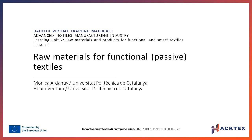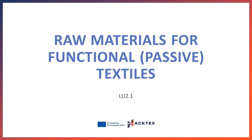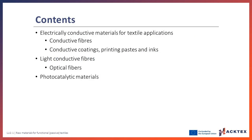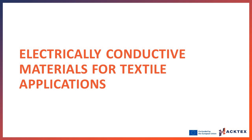HACTEX Training Materials, Advanced Textiles Manufacturing Industry, Learning Unit 2: Raw Materials and Products for Functional and Smart Textiles. Lesson 1: Raw Materials for Functional Passive Textiles. Passive smart textiles are materials that can only sense environmental conditions, their interaction with the surroundings being extremely limited. In this lesson you will learn about raw materials that provide electrical conductivity, light conductivity, and photocatalytic effect used in passive or functional smart materials.